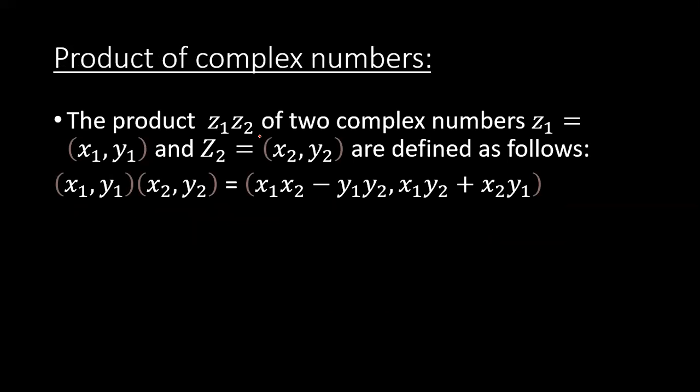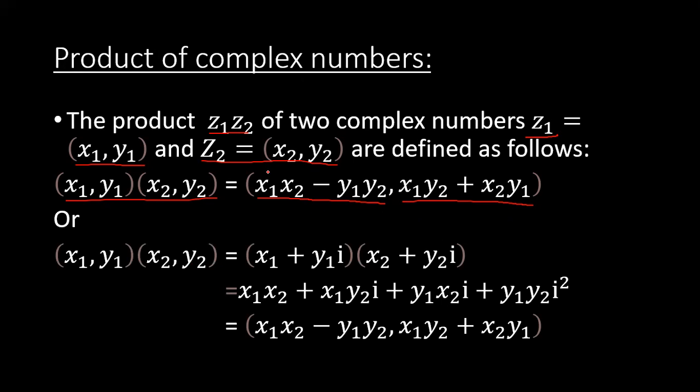Next, let's move toward the product of complex numbers. If we take the product z1·z2 of two complex numbers z1 = (x1, y1) and z2 = (x2, y2), their product will be of this form: (x1, y1)·(x2, y2) = (x1x2 - y1y2, x1y2 + x2y1). Now let's see how this product is derived.